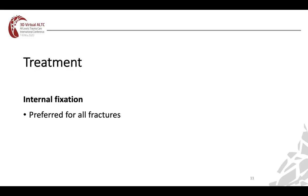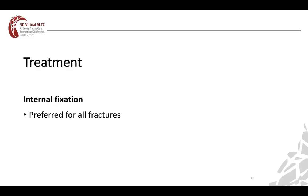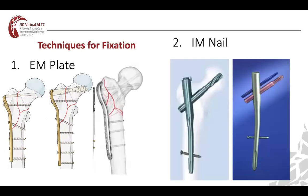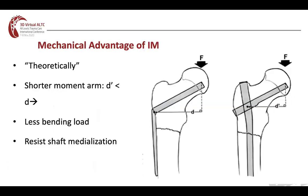We need to fix all subtrochanteric fractures, so fixation is preferred for all fractures including elderly patients. The techniques include extra-medullary plates like the blade plate, the DCS, and the proximal femoral lock plate, or cephalomedullary nails — intramedullary devices. The mechanical advantage of intramedullary devices is that the plate has a longer moment arm, whereas the nail has a shorter moment arm than extra-medullary fixation, and hence less bending loads and less shaft medialization.